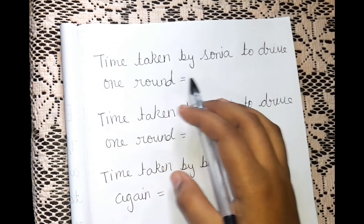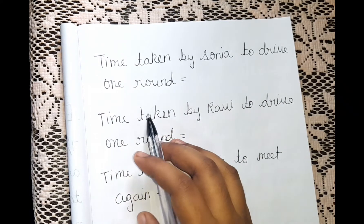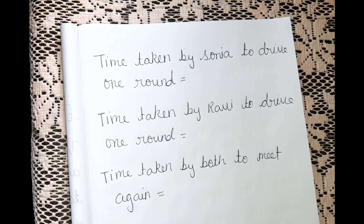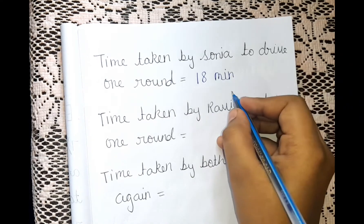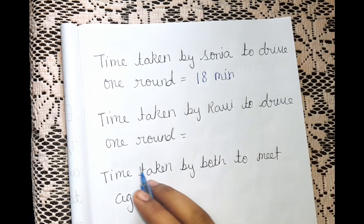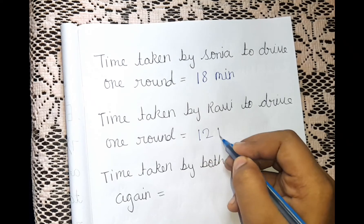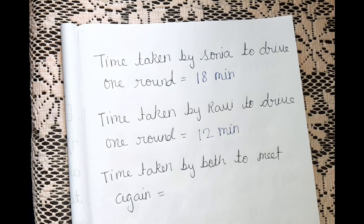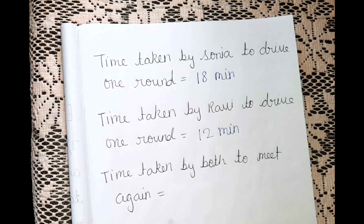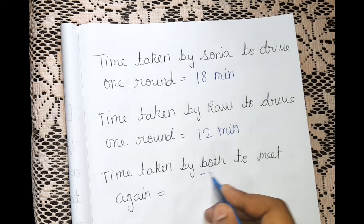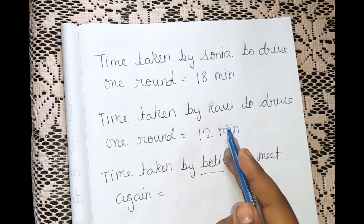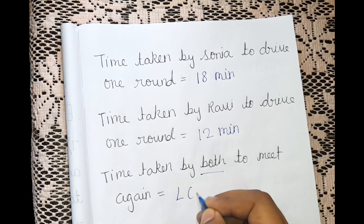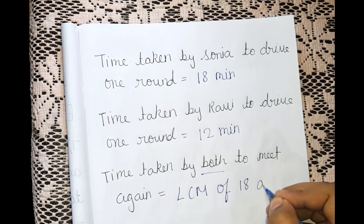We shall write the time taken by Sonia to drive one round. As you guys know, Sonia took 18 minutes, so we write 18 minutes. Time taken by Ravi to drive one round is equal to 12 minutes. Read the question properly so that you can get these numbers. By getting these numbers, we can solve it. Then, time taken by both to meet again — since it involves both, we take both numbers, that is 18 and 12.